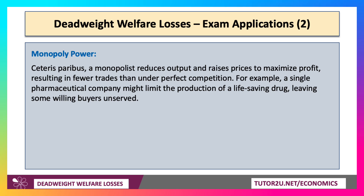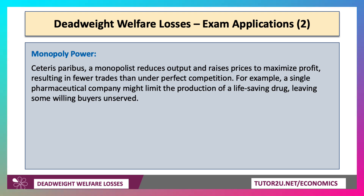Monopoly is going to be a key area where you can use this term. All other things being equal, ceteris paribus, a monopolist reduces output and raises price to maximise profit compared to a competitive market, giving us lower output and a higher price than under perfect competition. A good example would be a pharmaceutical company pricing way above marginal cost, limiting demand and supply and leaving some willing buyers unserved.